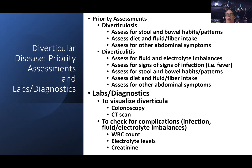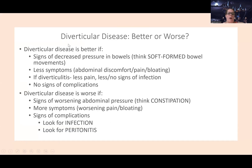For diverticulitis — remember it's the 'itis,' so there's inflammation — you do the same assessments but you also want to look for fluid and electrolyte imbalances. Pain assessment is very important here because pain will be a bigger issue. Look for signs of infection as well. To diagnose or visualize these conditions, we can do a colonoscopy or CT scan. We'll check labs like a white blood cell count for infection, and if they have nausea, vomiting, or diarrhea we may check electrolytes. Creatinine or kidney function is always good to check if we're worried about dehydration.